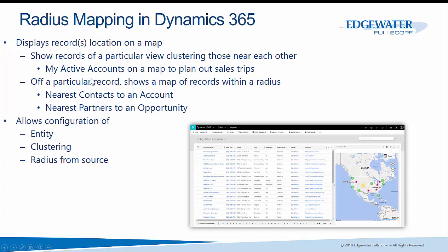The second use case is you can embed these maps onto, say, the account form to show nearest contacts to that account. When on an account, you can see all contacts within a 50-mile radius, or you can have a map on an opportunity that lists all accounts of customer type partner, helping salespeople quickly identify the closest partners to the opportunity they're working on.